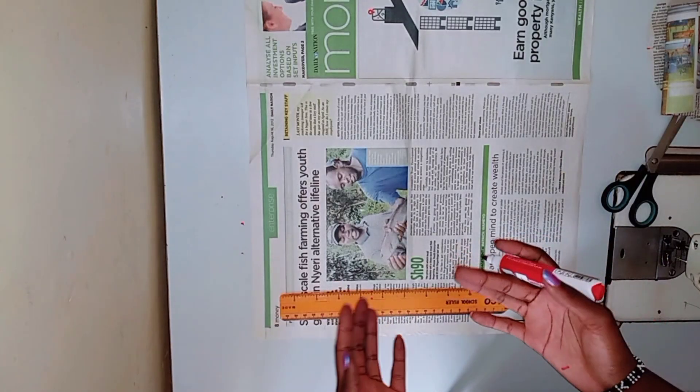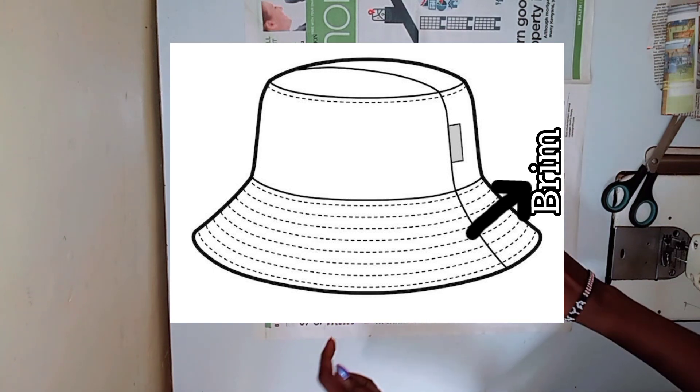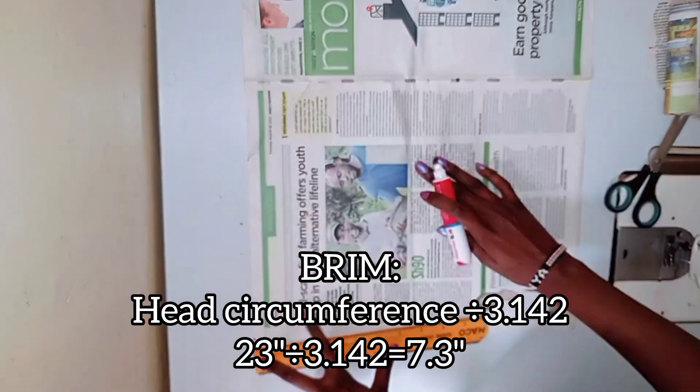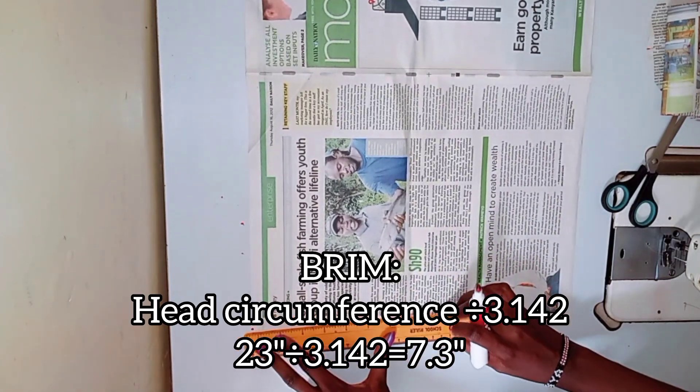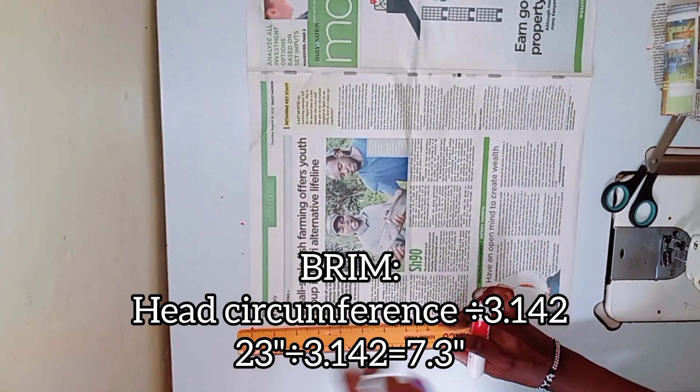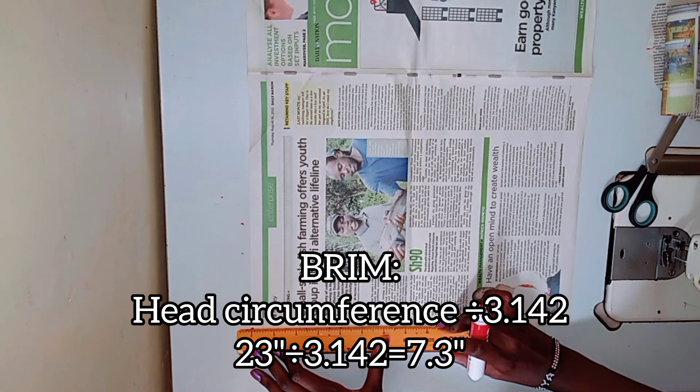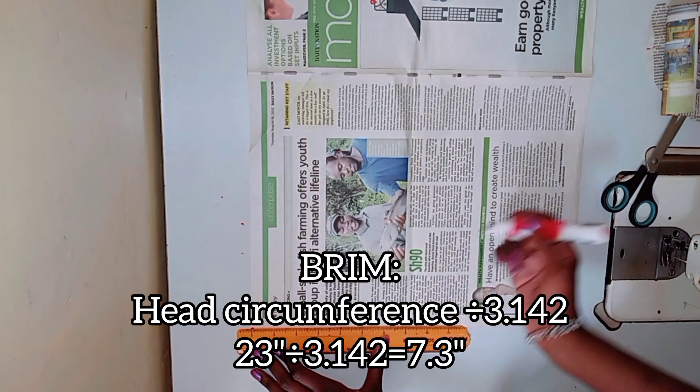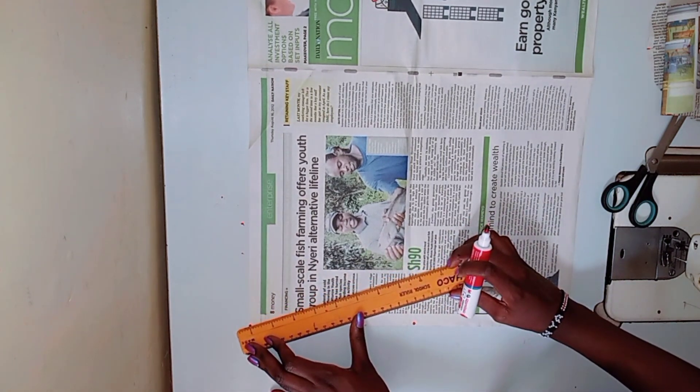Finally, let's work on the brim. This is the part of the hat that shades your eyes from the sun. To start, you need to divide your head circumference by 3.142. My head circumference was 23, so I divided it by 3.142 and I got 7.3 inches. That is what I am marking right now on the screen, and I'm going to mark it all around.